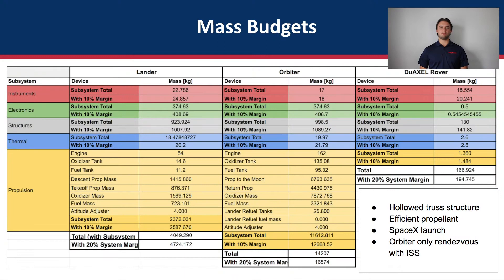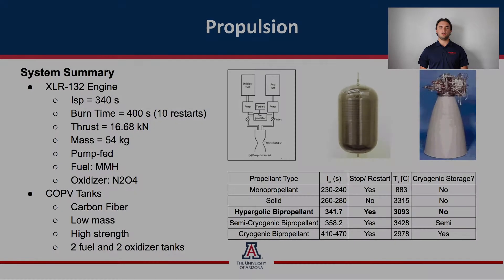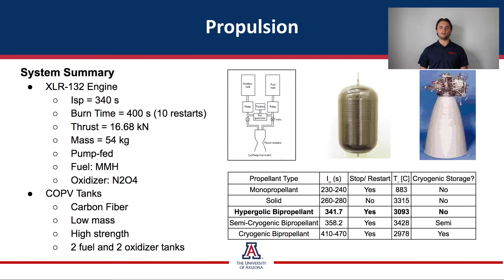Here is a table with our mass budgets that breaks down the mass of each vehicle subsystem designed to fit within the Falcon payload. Both the orbiter and lander use the efficient XLR-132 engine which uses N2O4 oxidizer and MMH fuel. The propellant tanks used are carbon fiber composite overwrapped pressure vessels, which were chosen because of their high strength and low weight.